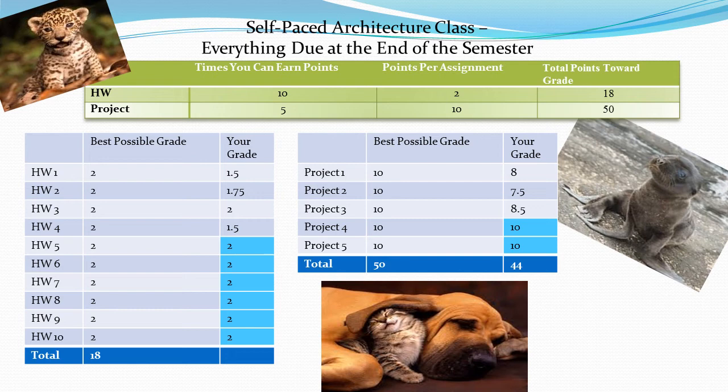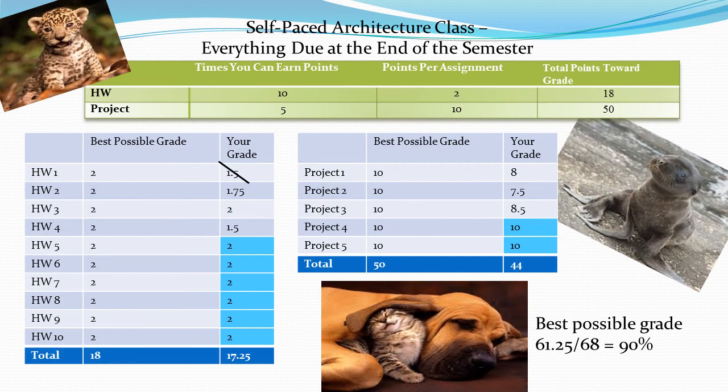We've put in all the grades earned so far and the maximum points for remaining assignments. Remember to drop your lowest homework grade when totaling — in this case, that lowest grade is a 1.5. So we drop the 1.5, giving a homework total of 17.25. That means the best possible grade is 90%.